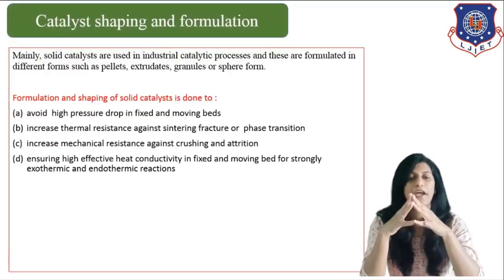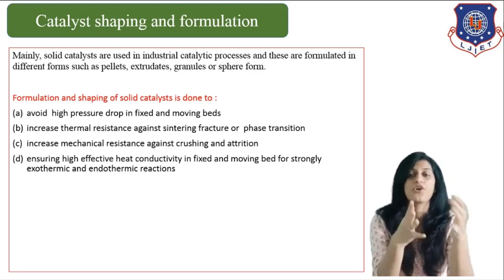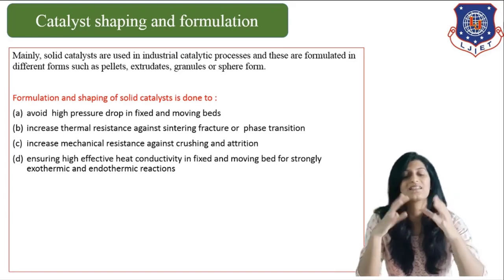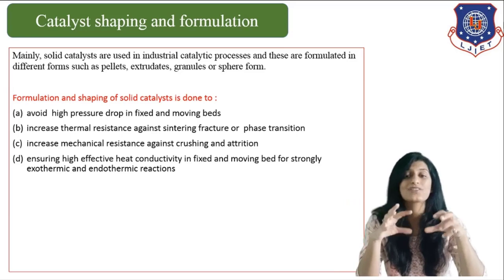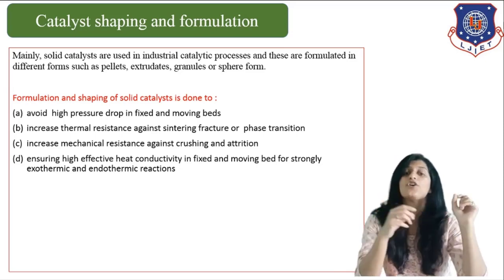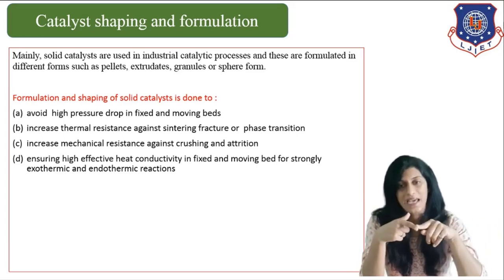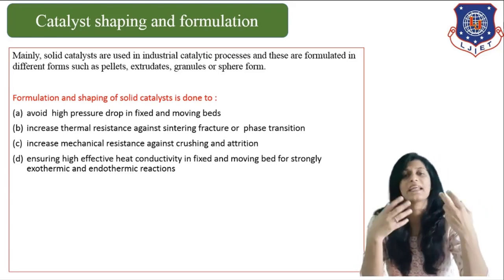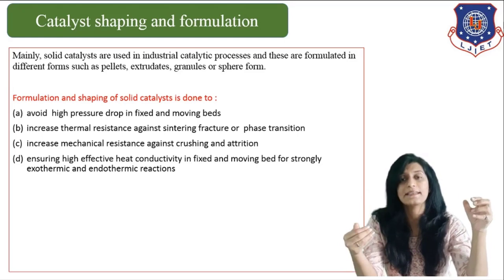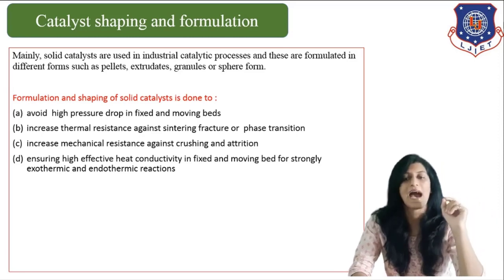After the step of calcination, we proceed with the next step known as catalyst shaping or formulation. Solid catalysts are mainly used in industrial catalytic reactors, and these formulated forms can be used in different shapes such as pellets, granules, spheres, or other forms. We need to give the catalyst uniform shapes required for our process. Catalyst formulation and shaping is basically done to avoid high pressure drop in beds.